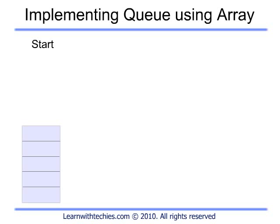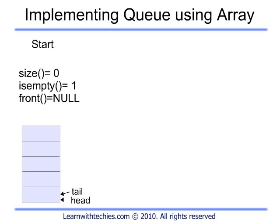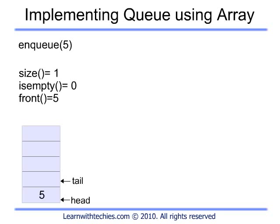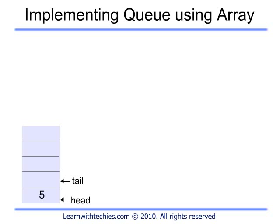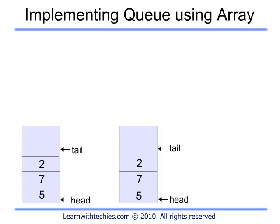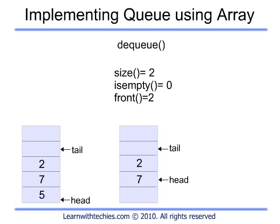Initially the queue is empty, so head and tail will both point to the zeroth element. The empty condition is determined when head is equal to tail. An NQ is performed with 5 — this will insert the element at the current tail and increment it. Head will remain at the same place. A number of NQs are performed and you can see how tail keeps incrementing. When a DQ is performed, head is incremented. It is immaterial whether we actually mark element 5 as deleted or not, as incrementing head is sufficient.